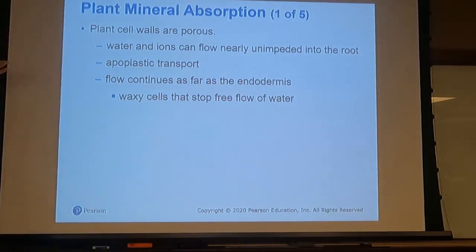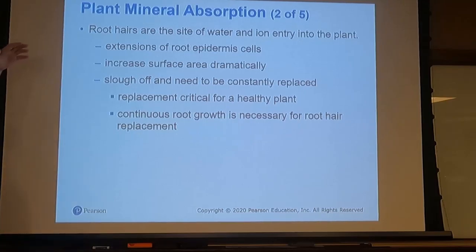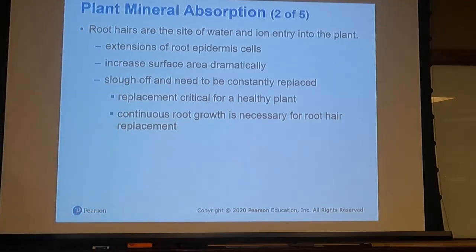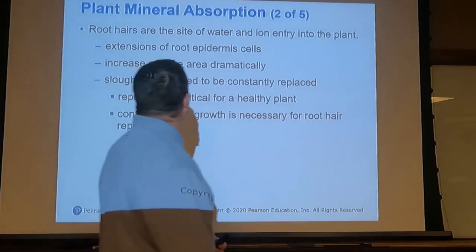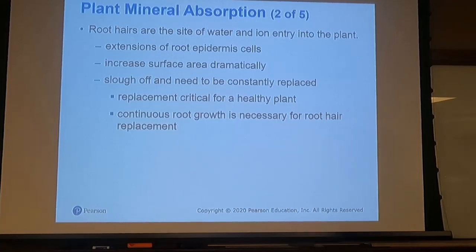This slide is really more about fertility than mineral nutrition. We talked before about how water flows into the root — we have two different transport pathways. Apoplastic transport continues as far as the endodermis, and root hairs take up water and dissolved cations or anions. Root hairs are extensions of those epidermal cells, which also increases the surface area.